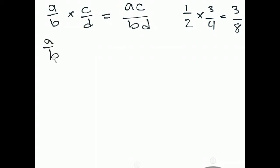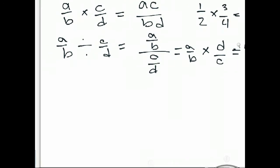Division is very similar, but the first thing we need to do is really convert it into a multiplication. Dividing by a fraction is the same as multiplying by its reciprocal. The reciprocal of C over D is flipping that fraction, D over C. And so now we just go ahead and multiply tops and multiply bottoms.